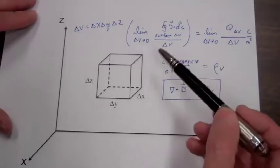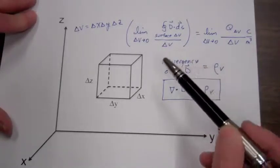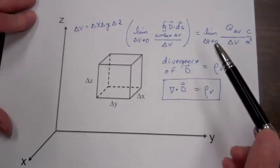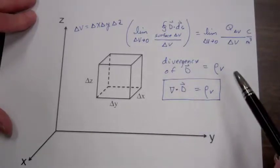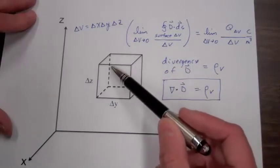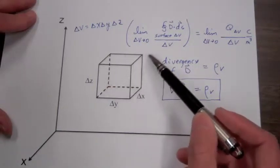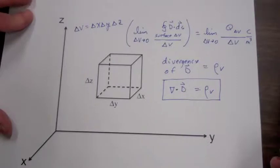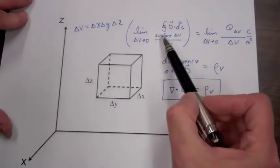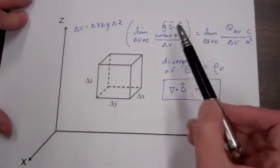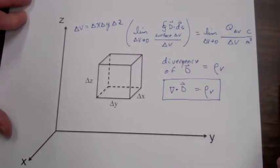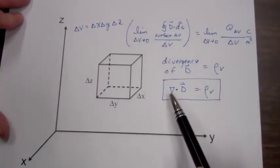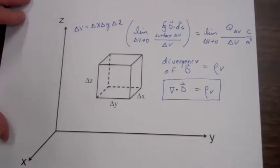We're going to assume we know the electric flux density field at the center of this cube and how that flux density changes with respect to x, y, and z, so that we can get an estimate of the electric flux density field on the six faces of the cube. We will then add up the integral of D dot dS on those six faces, divide by delta v, and take the limit as delta v goes to zero, giving us an equation for divergence in Cartesian coordinates.